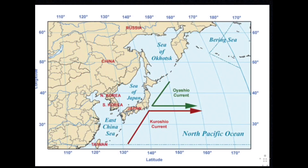Ocean currents also play a role. The warm-water Japan current — or Kuroshio current — flows northward along the southern and southeastern coasts of the Japanese islands. It adds moisture to the winter monsoons as it warms the land, so the Japanese area actually gets a little rain during the winter months because of this current coming from the south side of Japan.